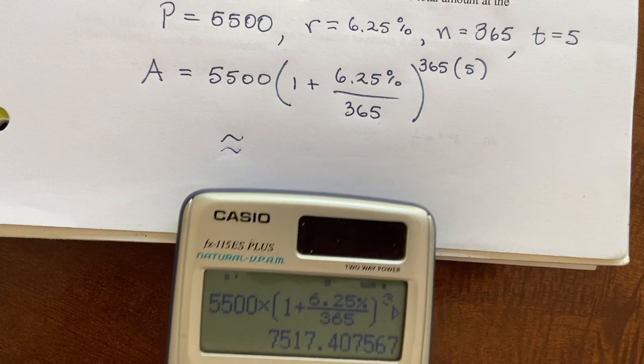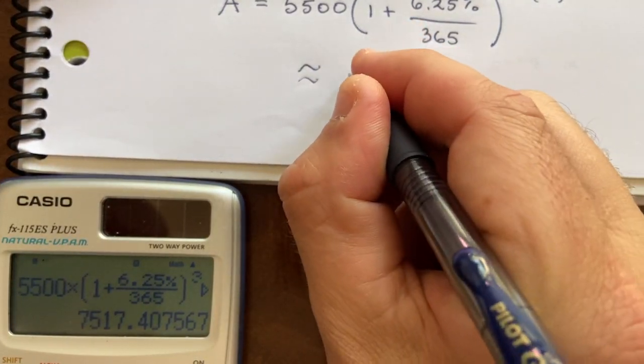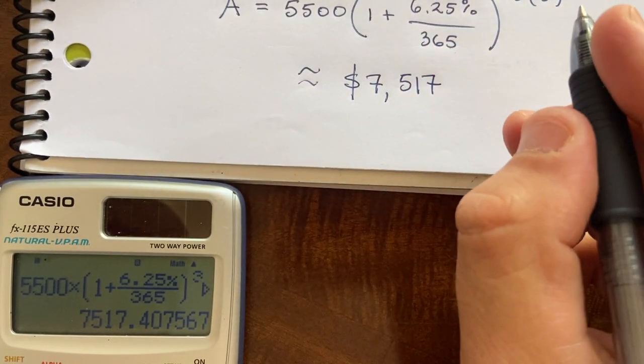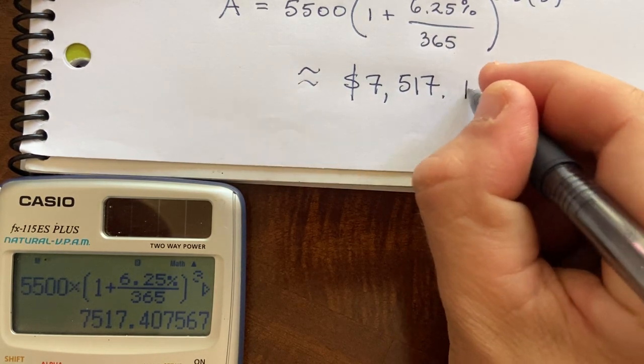I'll type this into my calculator and approximate to the penny. So 5,500 times parentheses 1 plus 6.25 percent over 365 parentheses raised to the 365 times 5. So this is about $7,517.41.